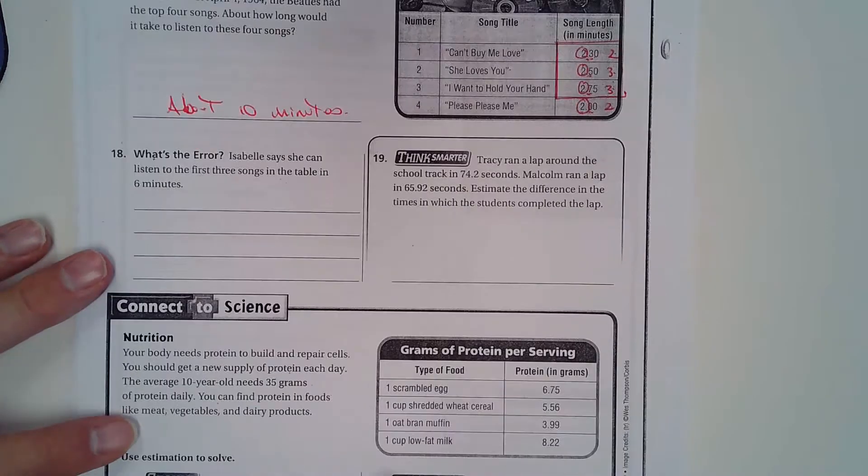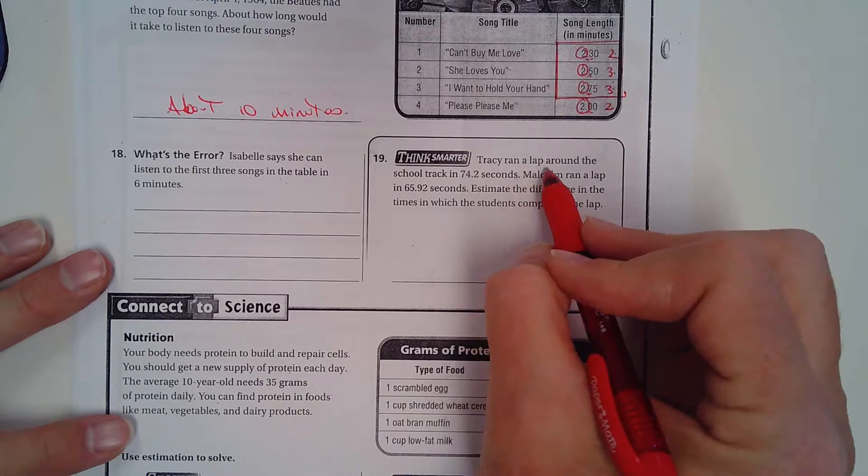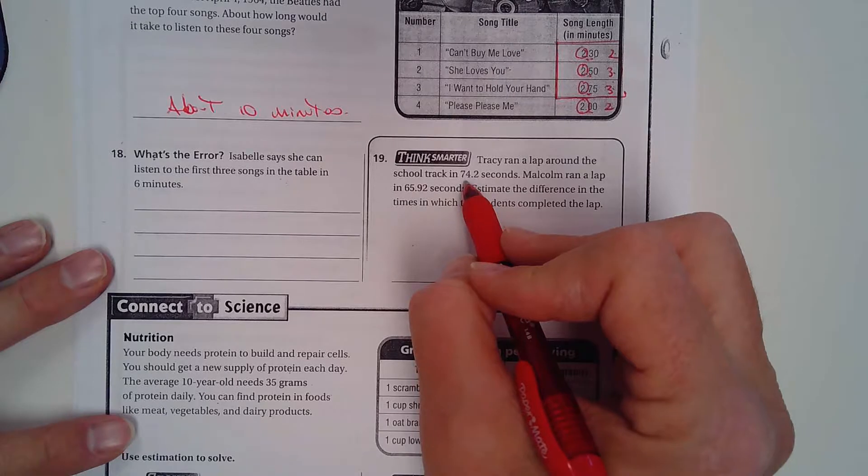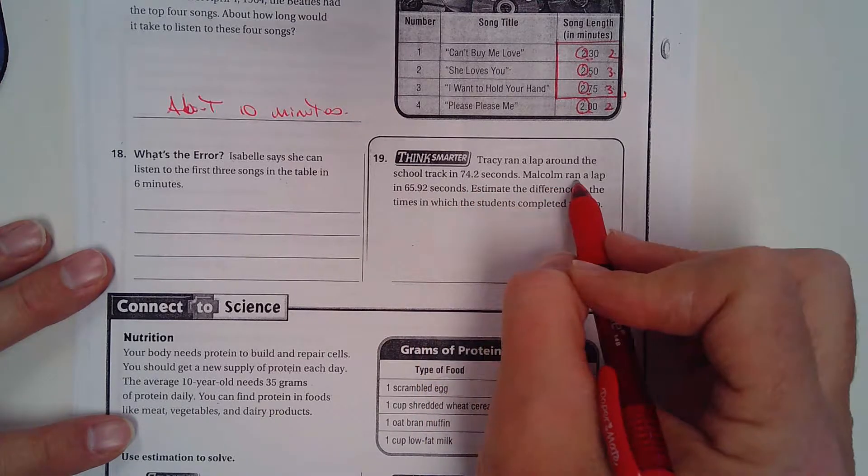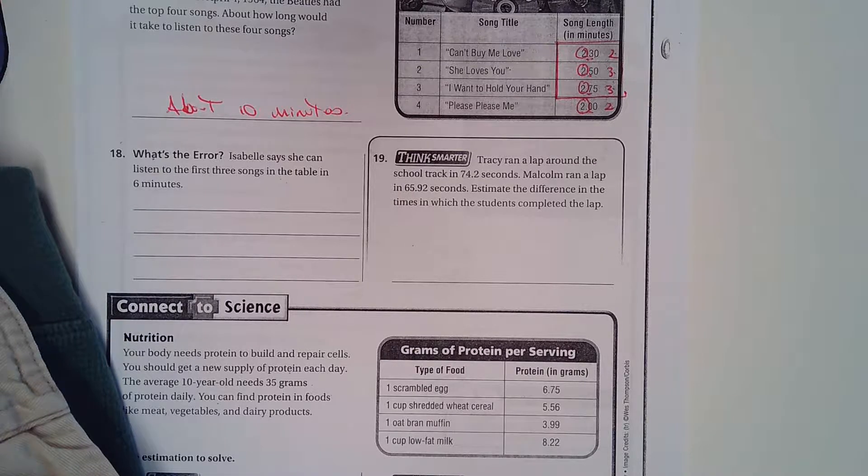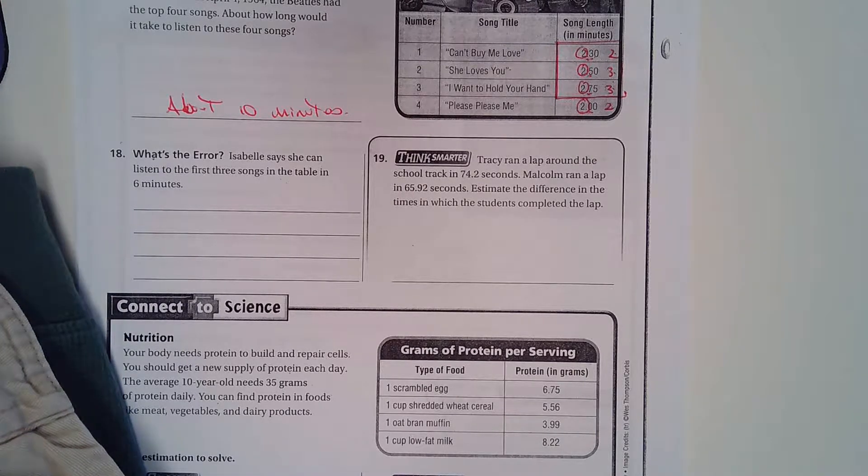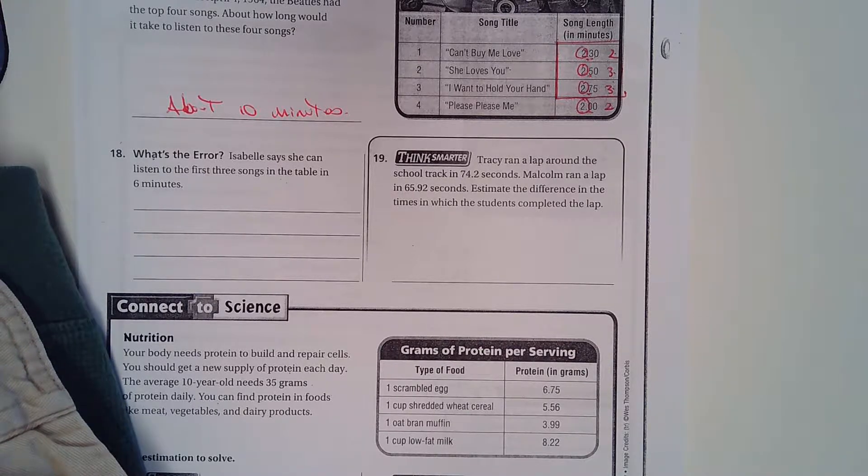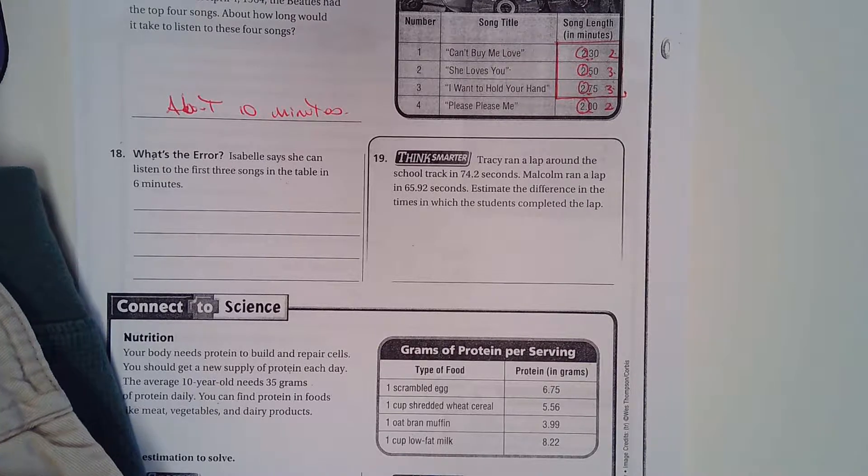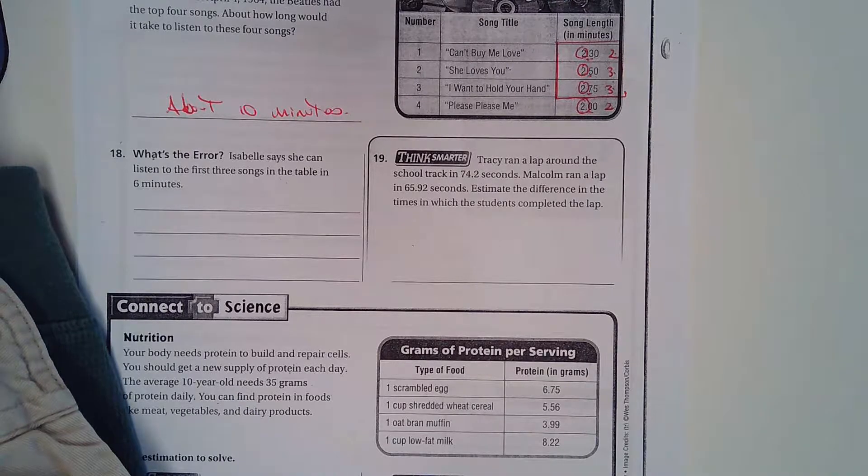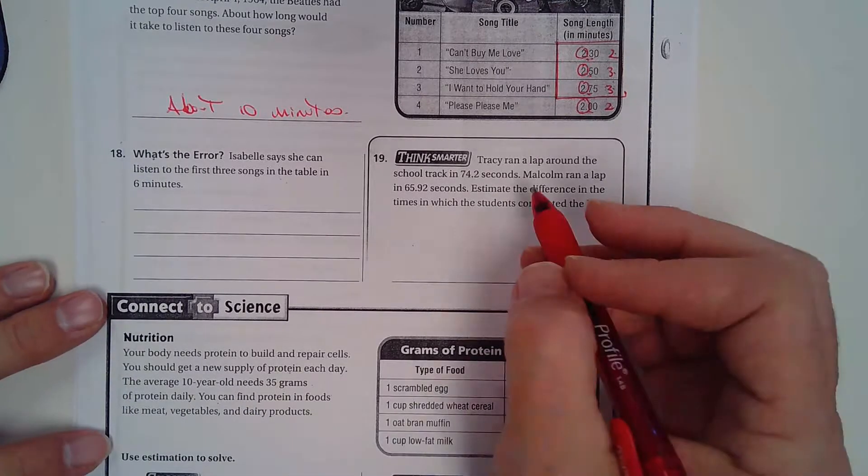All right, here's number 19. Tracy ran a lap around the school track in 74.2 seconds. Malcolm ran a lap and - videos where my music ended here. Hopefully this is still recording. Is it? Yay, good. I got it. Hope this took. All right, gosh, it's quiet now.